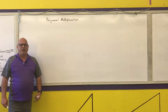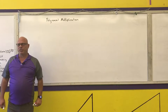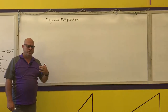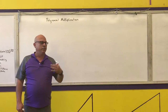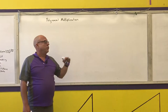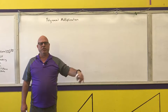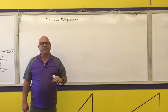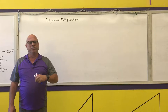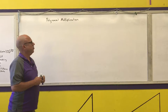The next polynomial operation we're going to talk about is polynomial multiplication. There are three basic ways that you can do the work to multiply two polynomials together. Regardless of which of the three ways I'm going to show you, you're still going to do the exact same number of multiplications. It's just some of them are easier to use depending upon what type of polynomials you are multiplying.